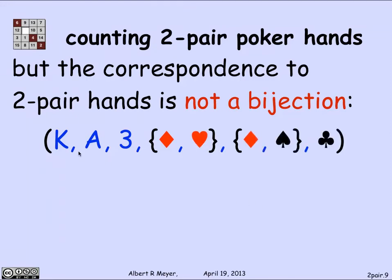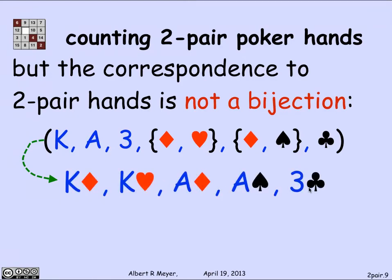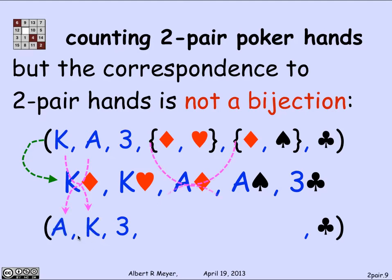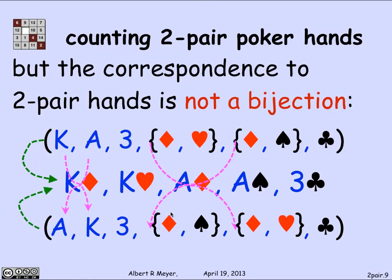Namely, if I look at the six-tuple where I choose kings then aces and a three with certain suits — which determines the hand: king of diamonds, king of hearts, ace of diamonds, ace of spades, three of clubs — there's another six-tuple that yields the same hand. What I can do is keep the three of clubs specified, but instead of choosing kings and their suits first and aces and their suits second, I choose aces and their suits first and kings and their suits second. Switching those two entries gives a different six-tuple specifying the same two-pair hand: a pair of aces with suits diamond and spade, and a pair of kings with suits diamond and heart, and the three of clubs.